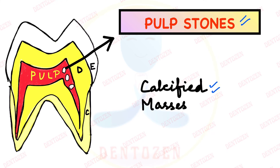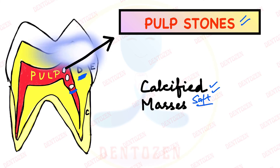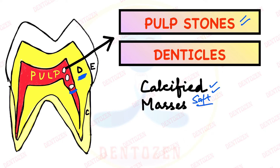Pulp is a soft tissue, but it is surrounded by a hard tissue, dentine, which is calcified. So because these pulp stones are also calcified like dentine, they are also called denticles. This is a commonly asked question — what is another name for pulp stones? Don't forget, they are also called denticles.